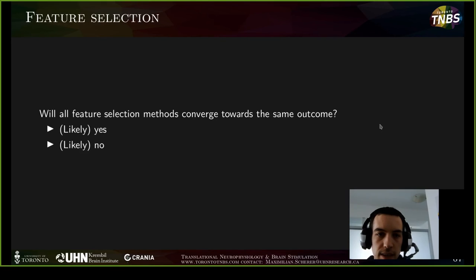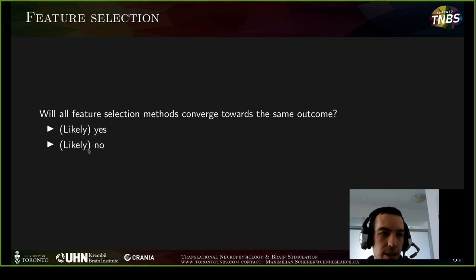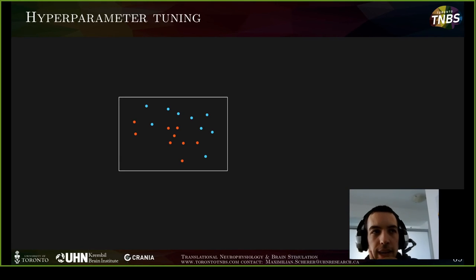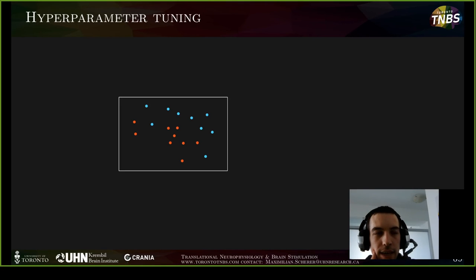The next topic is hyperparameter tuning. When applying a machine learning algorithm, beyond selecting the right learning type and training methodology, you also need to tune the hyperparameters. Not only the feature selection matters — many algorithms have hyperparameters. For example, in k-nearest neighbor, which classifies based on the most common class within a neighborhood, you need to define how many points or what distance constitutes a neighborhood. Changing these hyperparameters has a significant impact on classification results.